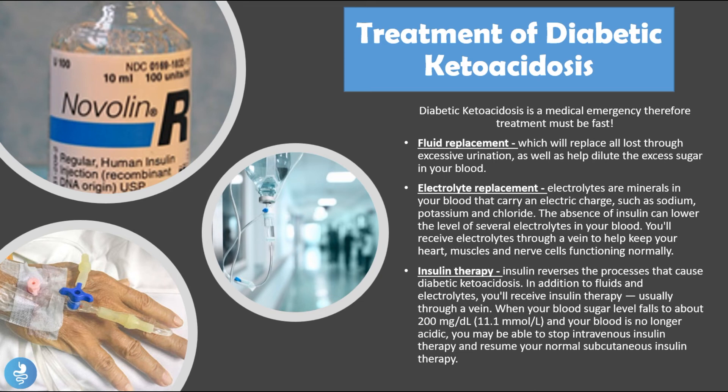Electrolyte replacement is also necessary because vomiting, rapid breathing, and excess urination can cause electrolytes to go off course. Electrolytes are minerals in the blood that carry an electrical charge, such as sodium, potassium, and chloride. The absence of insulin lowers the level of several electrolytes, so the patient receives electrolytes through a vein to help keep the heart, muscles, and nerve cells functioning normally.